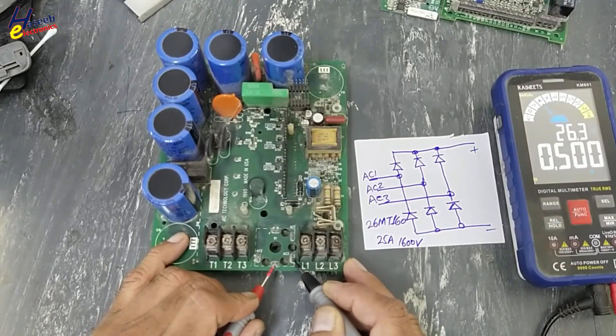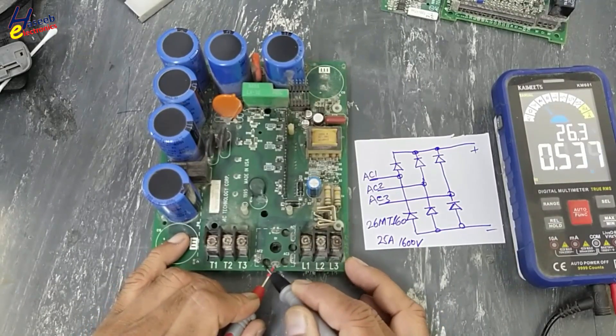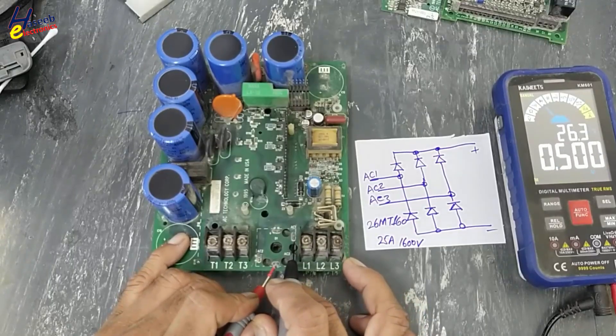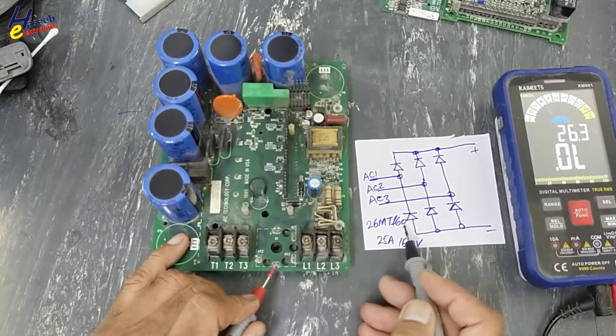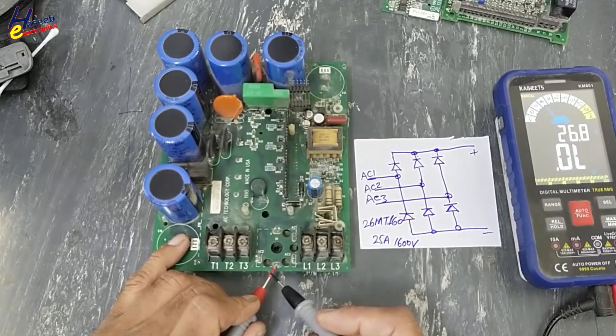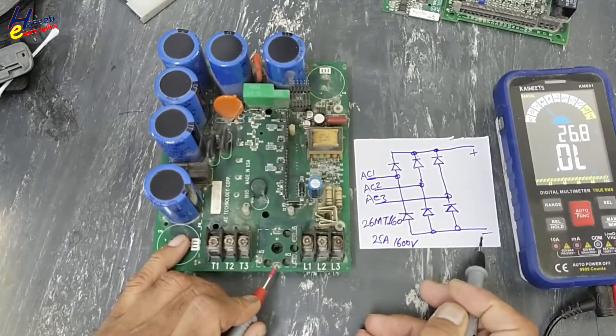Move red lead at negative terminal. One diode good, second diode good, third diode good. Low side diodes are giving forward bias because we are placing red lead at anode, negative terminal.